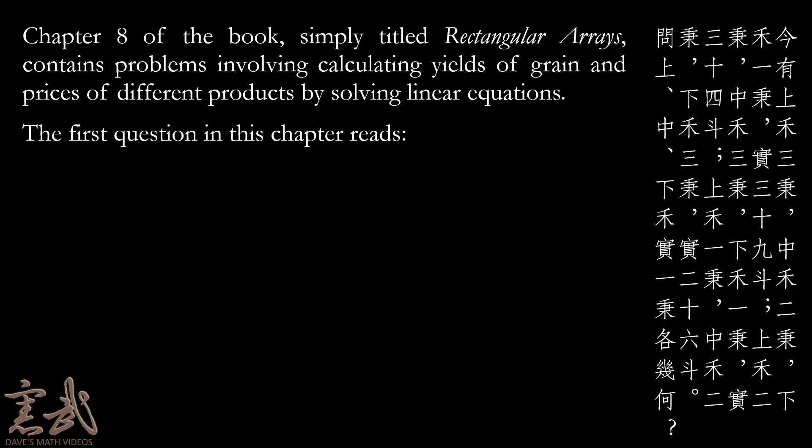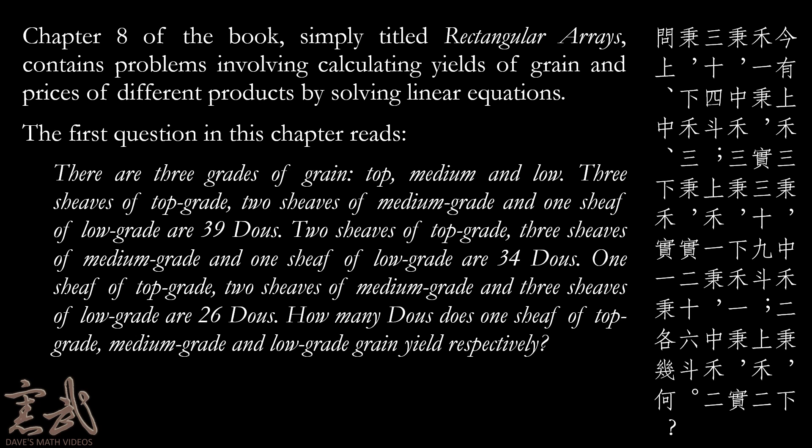The first question in this chapter reads, there are three sheaves of grain: top, medium, and low. Three sheaves of top grade, two sheaves of medium grade, and one sheaf of low grade are thirty-nine doughs. Two sheaves of top grade, three sheaves of medium grade, and one sheaf of low grade together are thirty-four doughs. One sheaf of top grade, two sheaves of medium grade, and three sheaves of low grade are twenty-six doughs. How many doughs does one sheaf of top grade, medium grade, and low grade grain yield respectively?